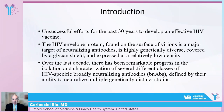Over the last 30 years there has been an unsuccessful effort to develop an effective HIV vaccine, but research has shown us that the HIV envelope protein, found on the surface of virions, can be neutralized through neutralizing antibodies. The problem is that the HIV envelope protein is genetically diverse, covered by a glycan shield, and expressed at relatively low density. Work by many people has led to the isolation and characterization of several classes of HIV-specific broadly neutralizing antibodies — BNAbs — defined by their ability to neutralize multiple genetically distinct strains of HIV.